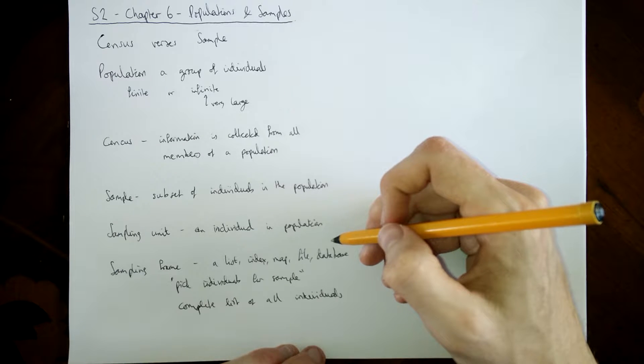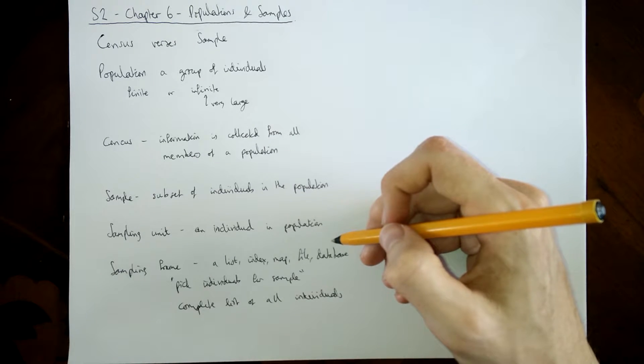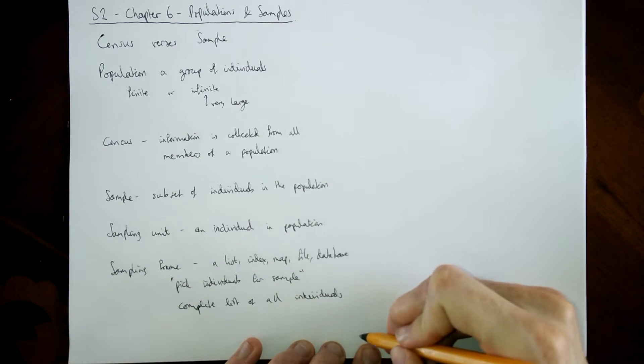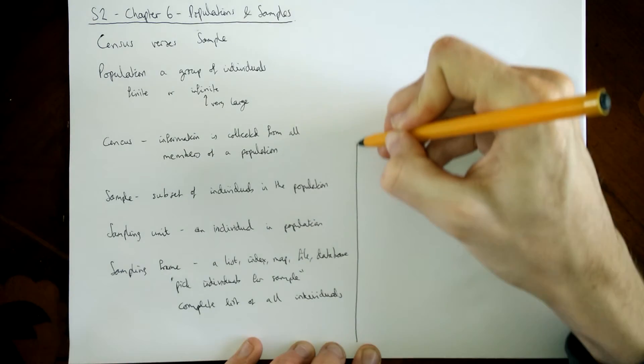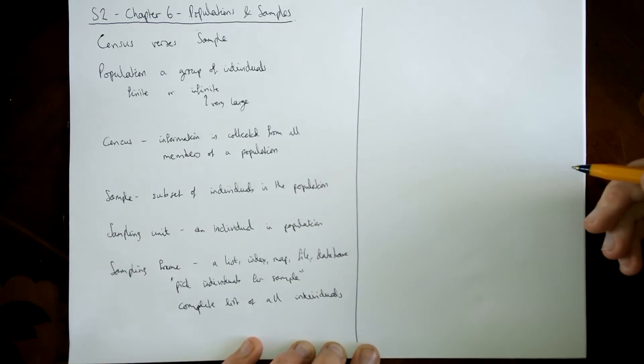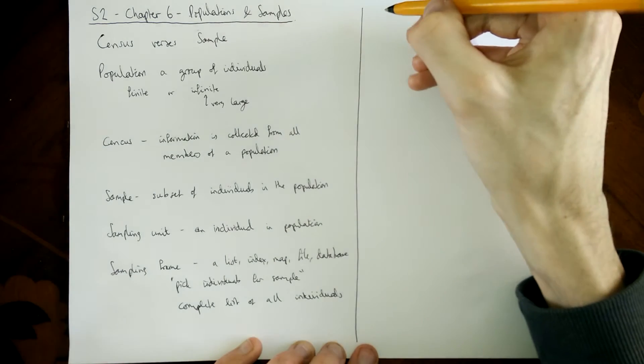Whereas sometimes it's very easy to have a sampling frame. For example, for TVs produced by a company, each TV has its own unique number. That list of all those unique numbers would be your sampling frame. Or for members of an organization, employees, they will have their own payroll number. That would be important when we talk about random sampling later, because having a complete list is required to always have a random sample. Otherwise you end up with biased samples.